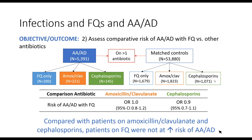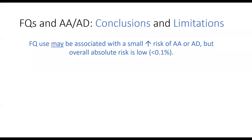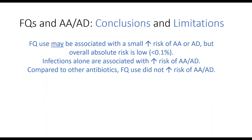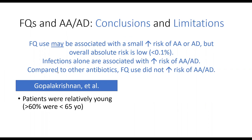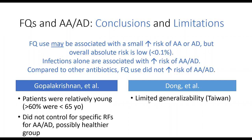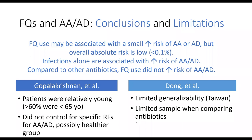What can we conclude from these two studies? Fluoroquinolone use may be associated with a small absolute increased risk of aortic aneurysms or dissections, but the overall absolute risk was less than 0.1%. Infections alone may be associated with an increased risk of aneurysms and dissections. Compared to other antibiotics, fluoroquinolone use did not seem to increase the risk. Limitations: in the first study, patients were relatively young and specific aneurysm risk factors were not controlled. The second study was done in Taiwan with limited US generalizability, and the antibiotic comparison groups had limited sample sizes in the hundreds.